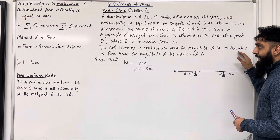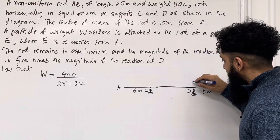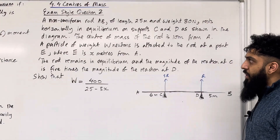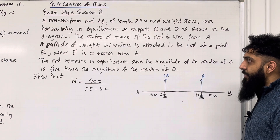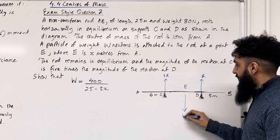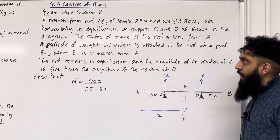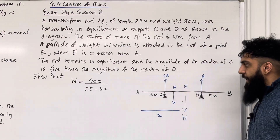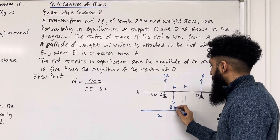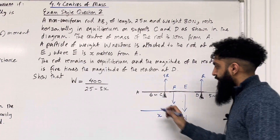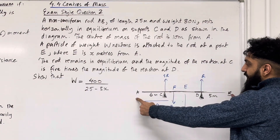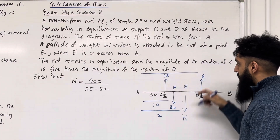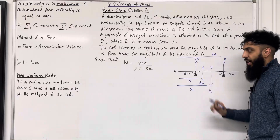Firstly I'm going to label all the forces acting in this particular scenario. The magnitude of the reaction at C is 5 times the magnitude of the reaction at D. Suppose the reaction at D is R, so the reaction at C is going to be 5R. A particle of weight W Newtons is attached at point E, which is X metres from A. The centre of mass of the rod is 10 metres from A — let's call this point F — and the weight is 80 Newtons. The total length AB is 25 metres, so the distance from A to the reaction force R at D is 25 take away 5, which is 20 metres. This is my complete force diagram.